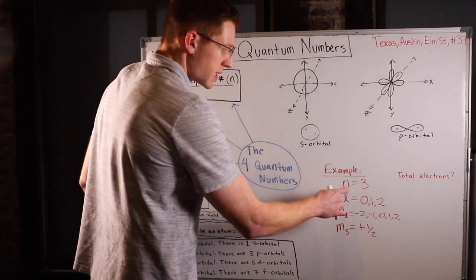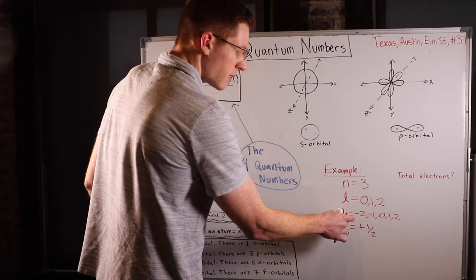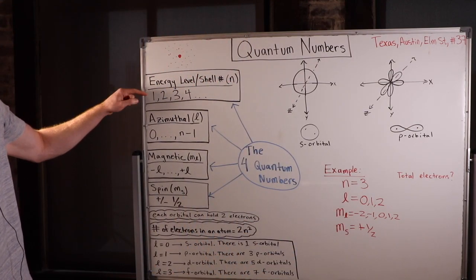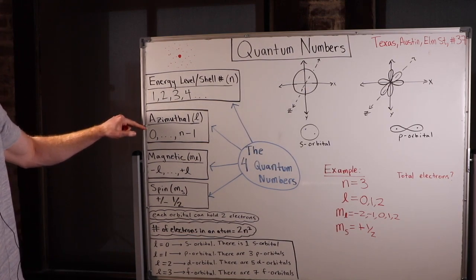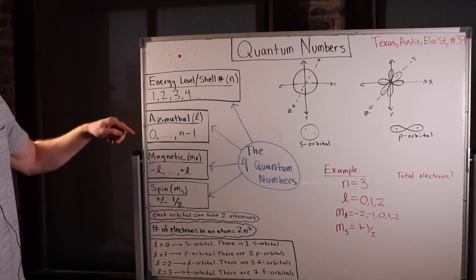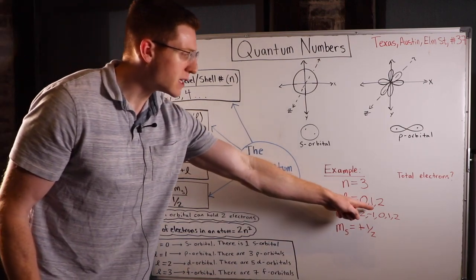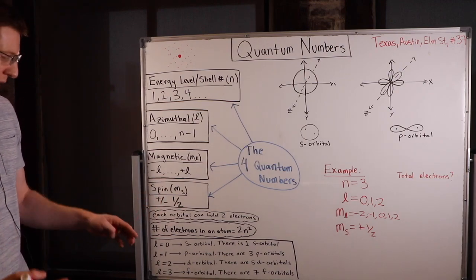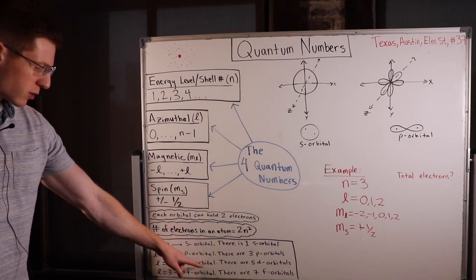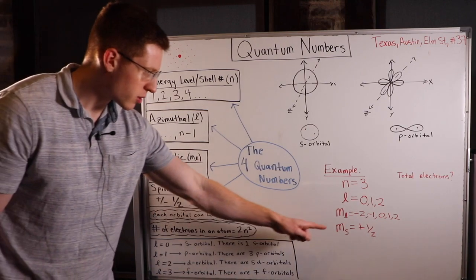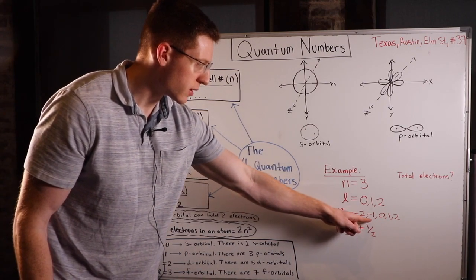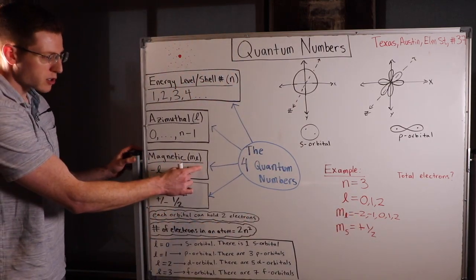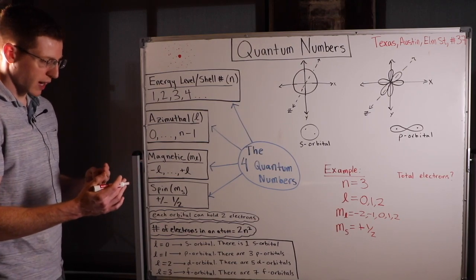Notice how in order to get the next number — the more specific parts of the address — you have to have the previous number. When we picked N equals 3, we knew the azimuthal number could be 0, 1, or 2. Then from the azimuthal number we had to pick one, so we picked 2. We knew L equals 2 means a d orbital, and that's why we had negative 2, negative 1, 0, 1, 2 — five M sub L values. M sub Ls tell you the number of orbitals that you have.